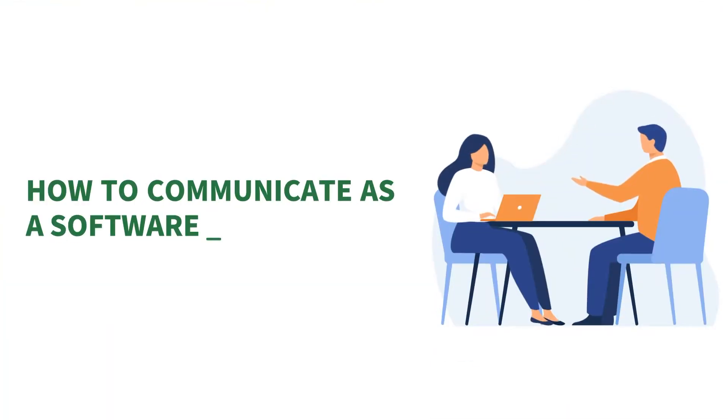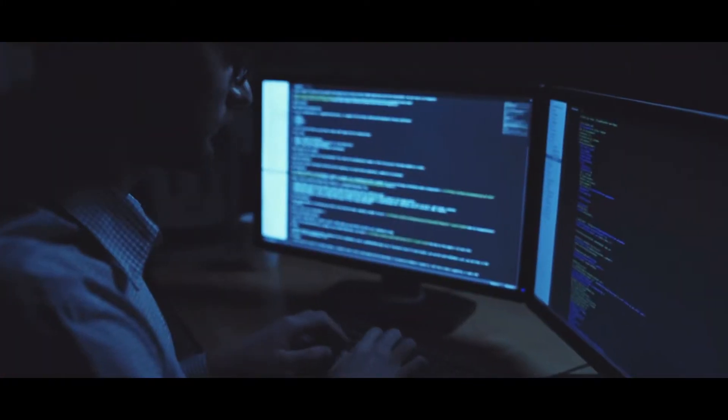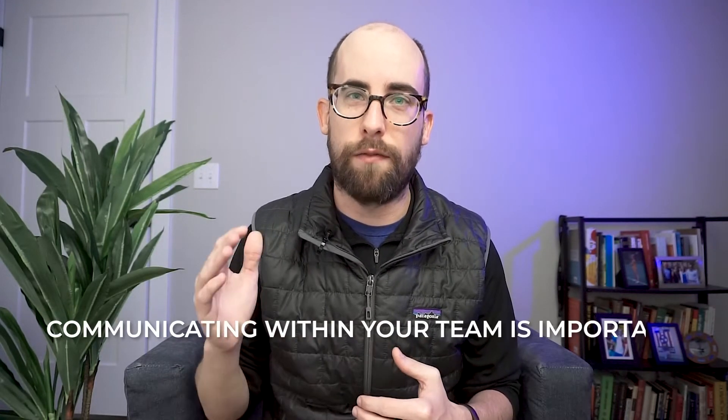Hey everyone, welcome back to the channel. Today we're going to talk about how to communicate as a software developer. I know what you might be thinking — what does this have to do with engineering? But the truth is that communication is one of the things that separates senior engineers from everybody else, and if you can do this well, it will really set you apart. It's easy to think that being a developer is just about writing code alone in a dark room, but most software development is done on teams, and because it's done on teams, communicating within your team is of the utmost importance.